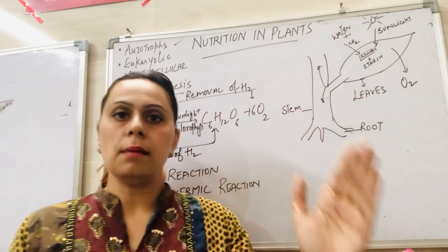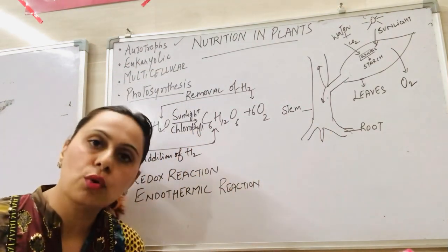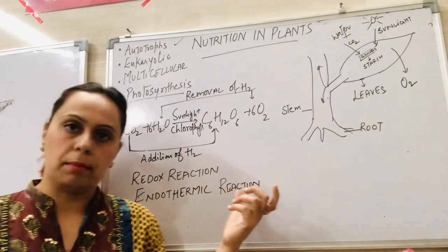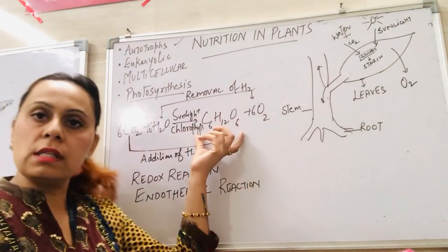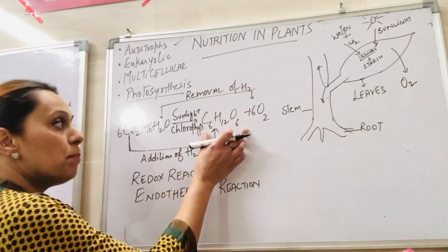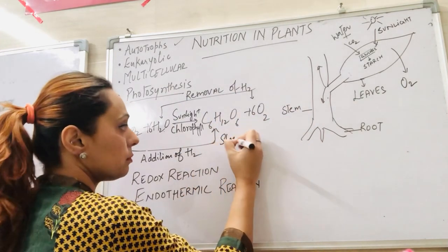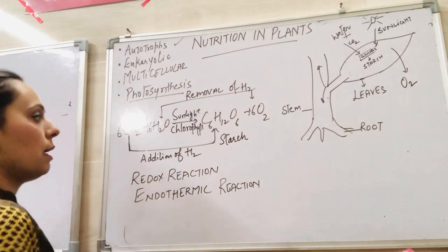Carbon dioxide and water are the inorganic substances and glucose is an organic substance. We call organic substances that contain carbon, hydrogen and oxygen elements. So glucose is an organic substance and it is the simplest one. When it becomes complex structure, it becomes starch. So this is a photosynthesis reaction.